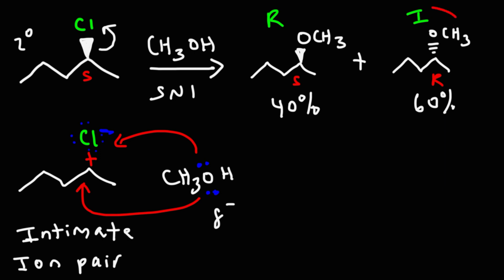And that's why we get more of the inverted product than the retention product. It's because of the intimate ion pair. The nucleophile can easily approach from the back because the chloride ion is not in its way. But as it tries to approach from the front, it's going to be repelled by the chloride ion, giving us less of the retention product and more of the inverted product.